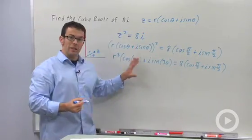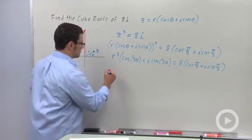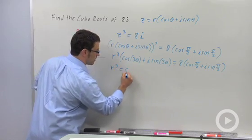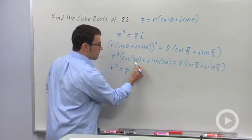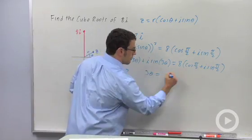Now, for these two sides to be equal, I need r cubed to equal 8. And I need 3 theta to equal pi over 2.